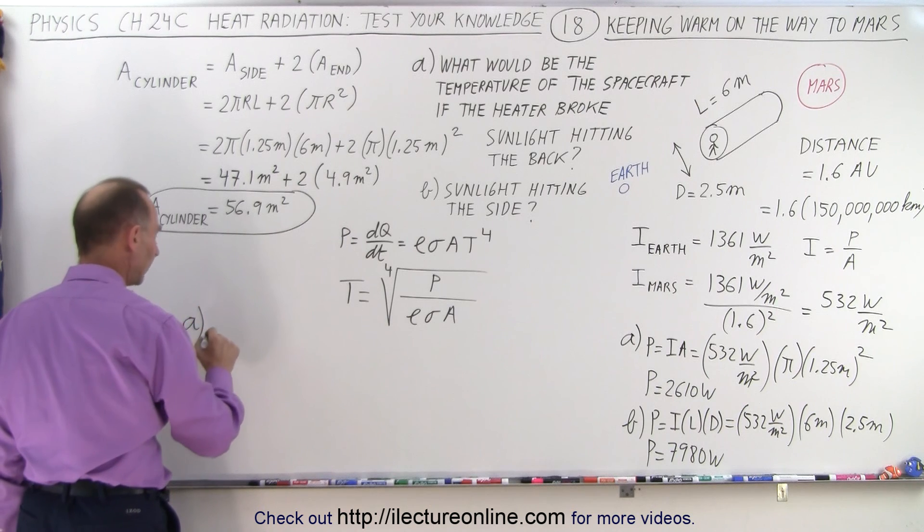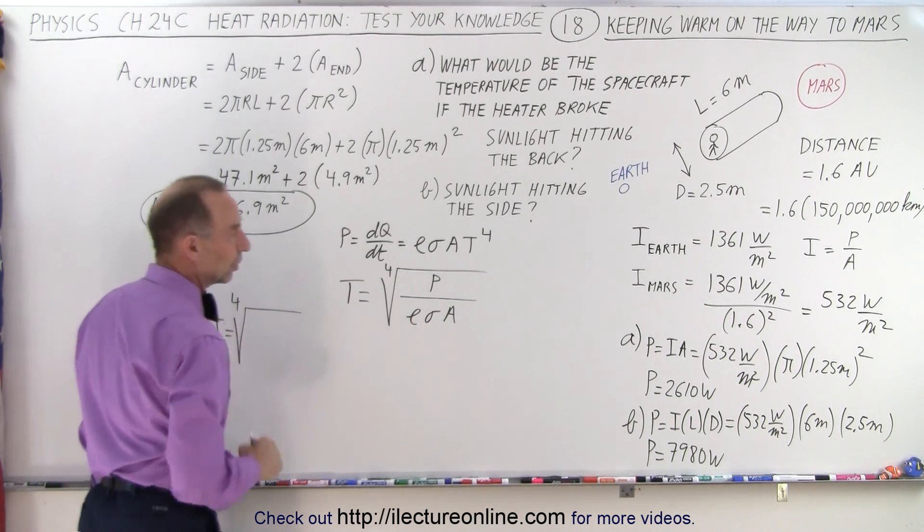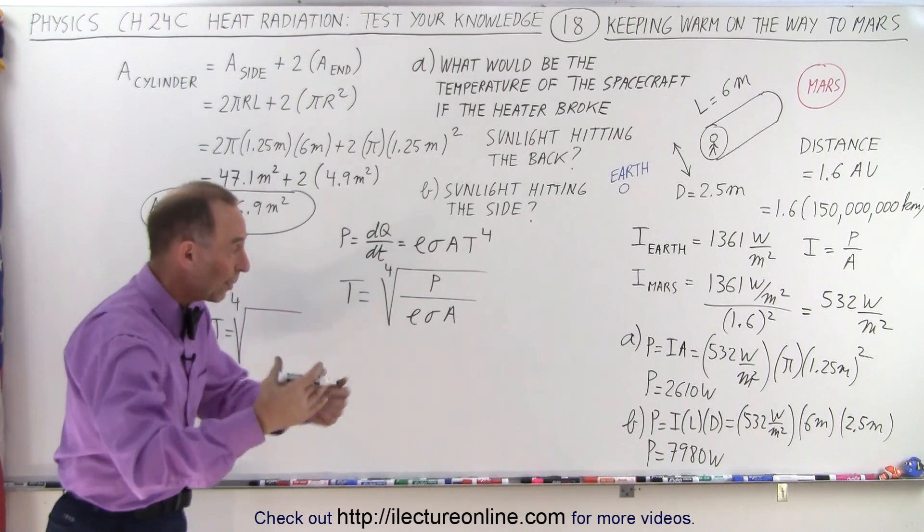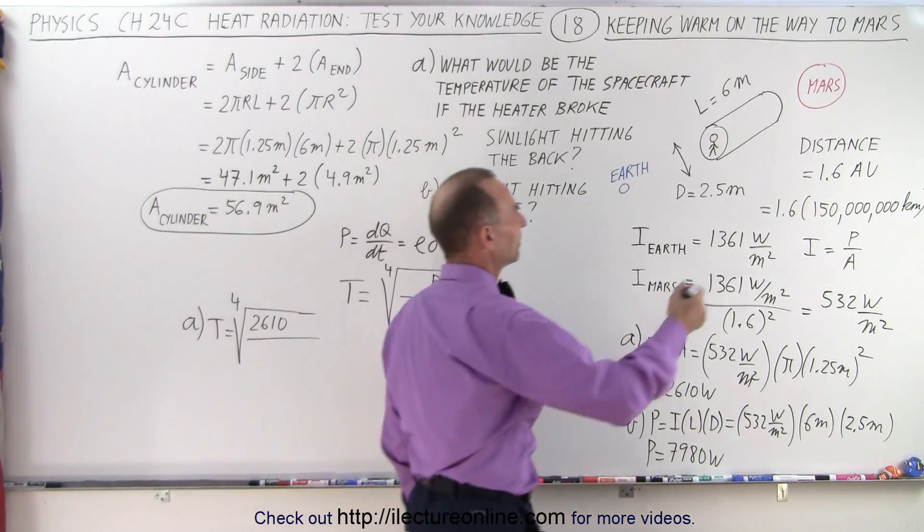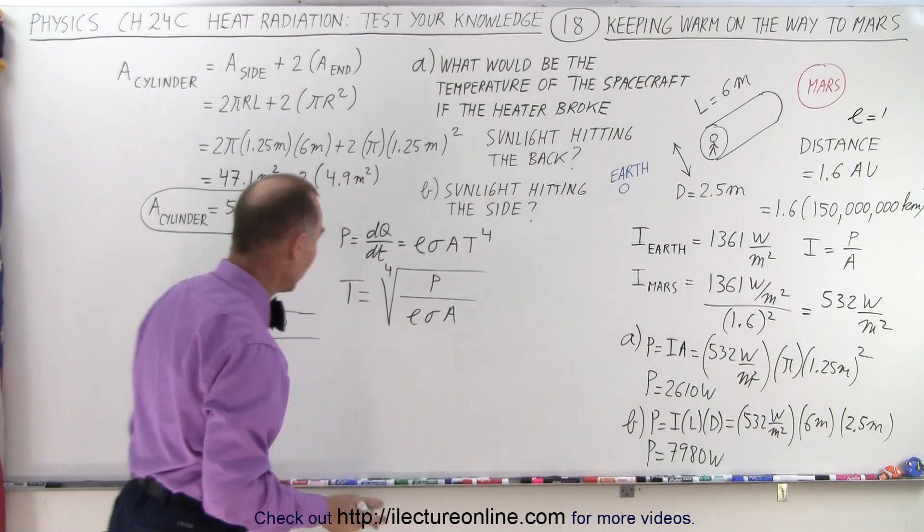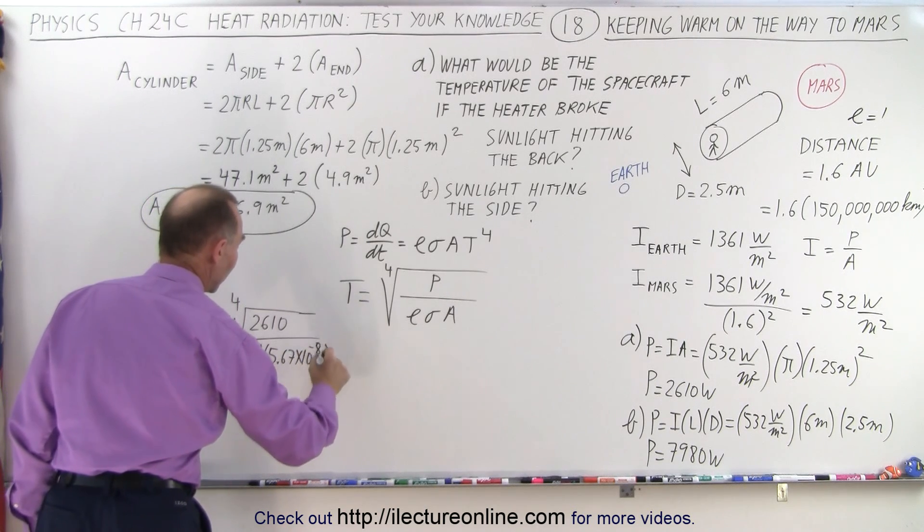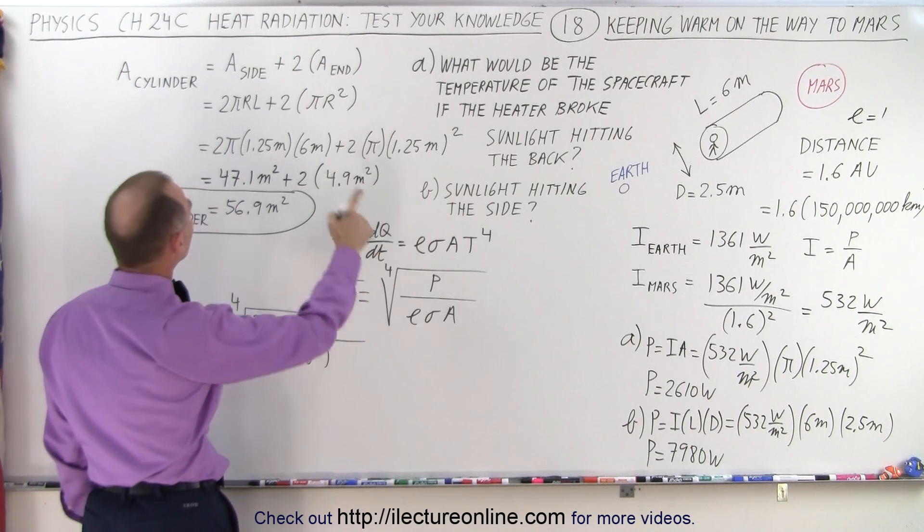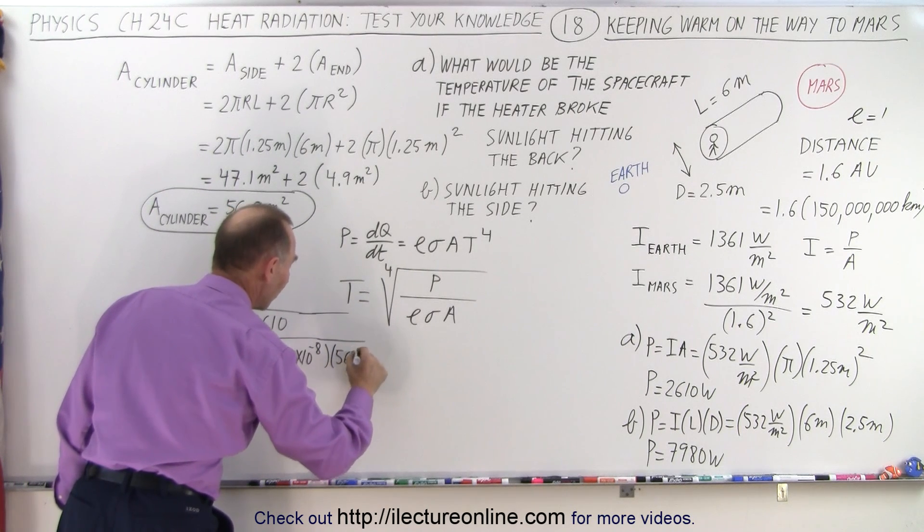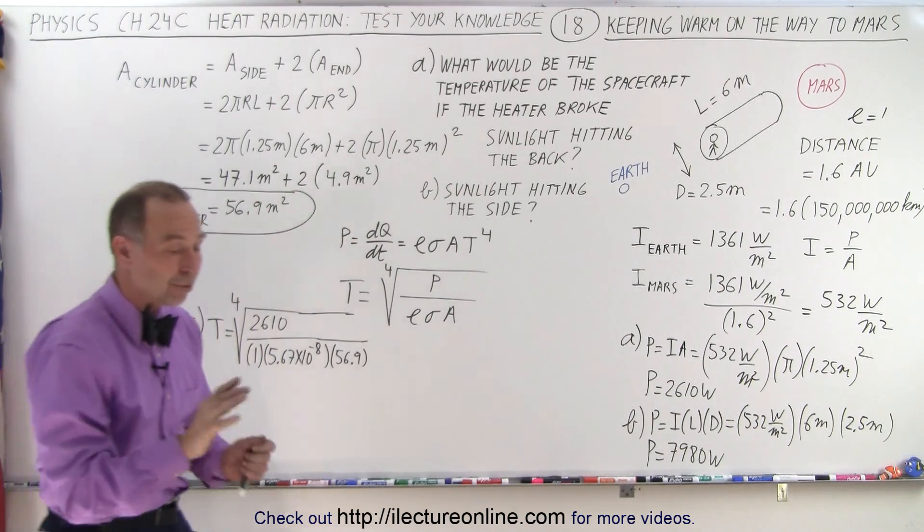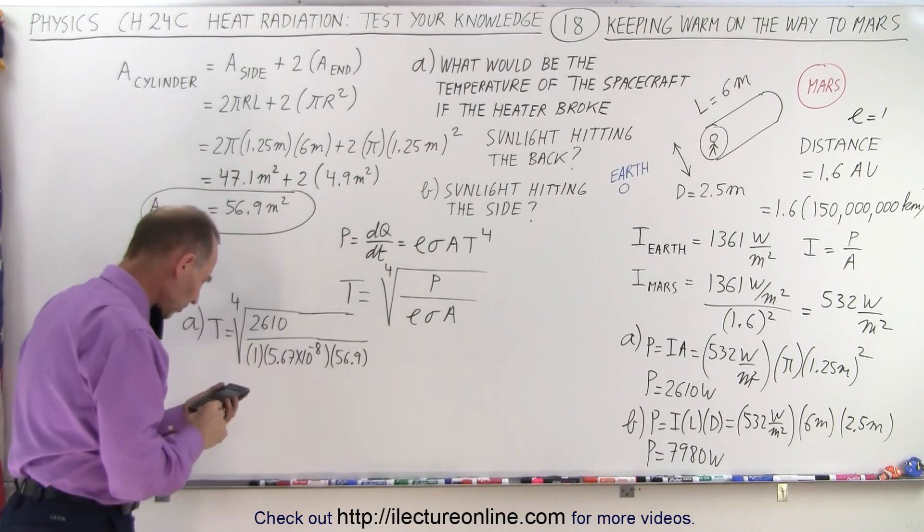All right, so for part A, the temperature is going to be equal to the fourth root of the power. So for part A, the power that we receive is 2610, which is also the power that's being radiated. So 2610 divided by E. Let's let E equals 1 to make it easy. So we'll just go ahead and use the emissivity constant to be equal to 1, sigma 5.67 times 10 to the minus 8. And then what else do we need? We need the area, and the area, well, it would be the entire spacecraft, would be 56.9. So it would be 56.9 square meters, and that will give us the equilibrium temperature when we only get sunlight from the very back, and then the whole spacecraft radiates. So let's see what that's equal to.